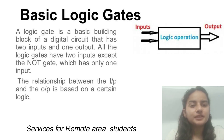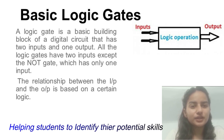In simple words, logic gates are a basic building block in which there are two inputs and one output. But there is a gate which has only one input. These relationships between input and output are based on a certain logic.